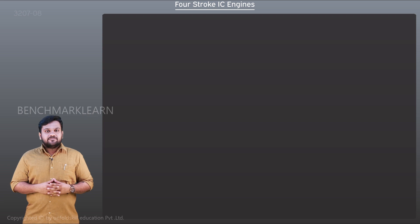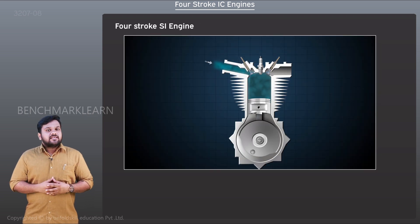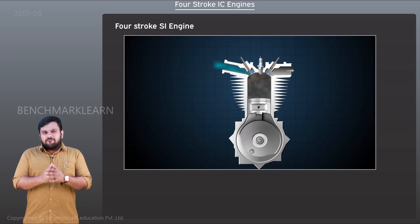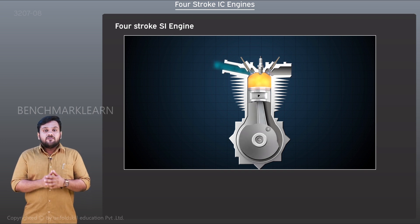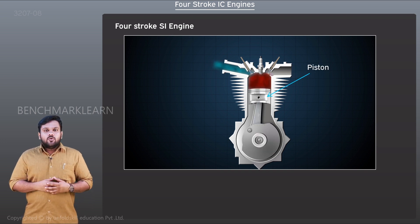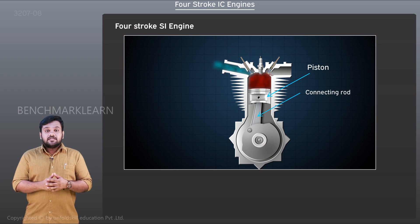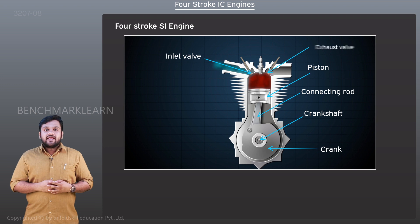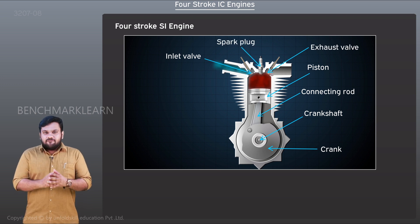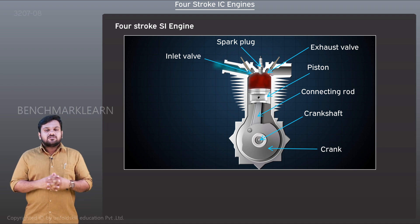A four-stroke spark ignition engine consists of a piston which reciprocates inside the cylinder, a connecting rod, crankshaft, crank, inlet valve, exhaust valve, and spark plug. A four-stroke spark ignition engine works on the Otto cycle.